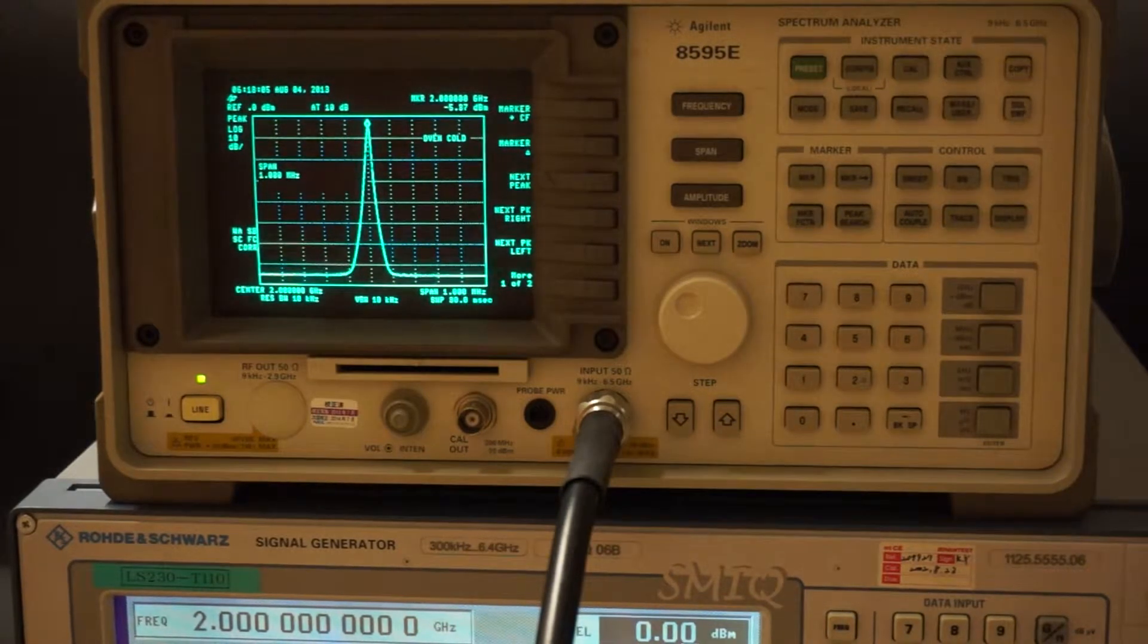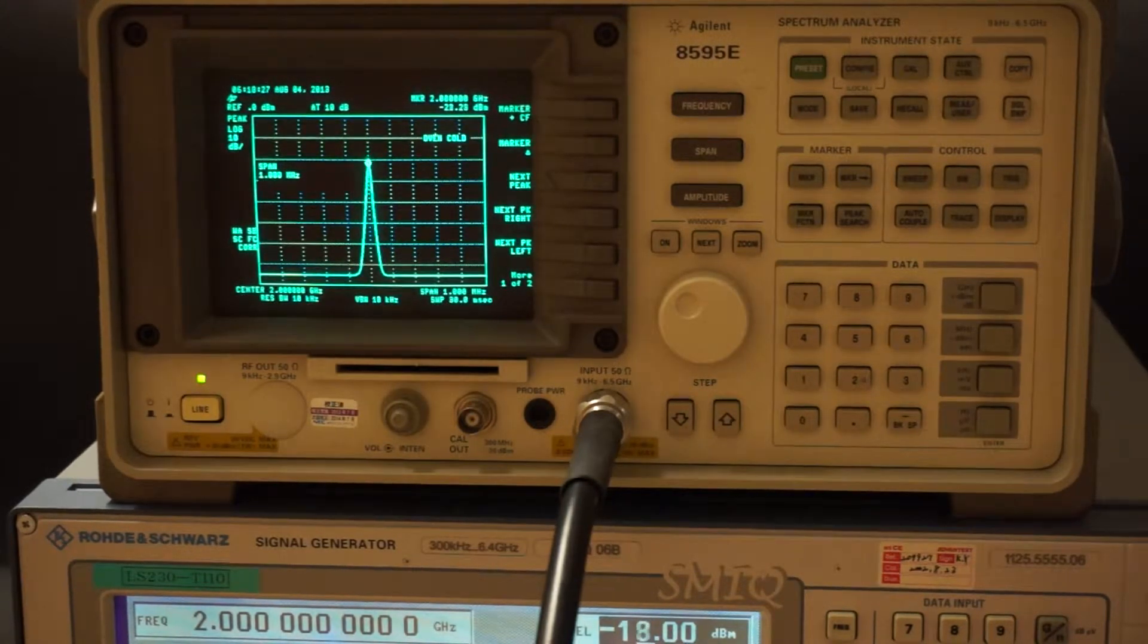Okay, now adjust the power output from the RF signal generator by one dB step down. So now you can see that the spectrum analyzer plugs this.